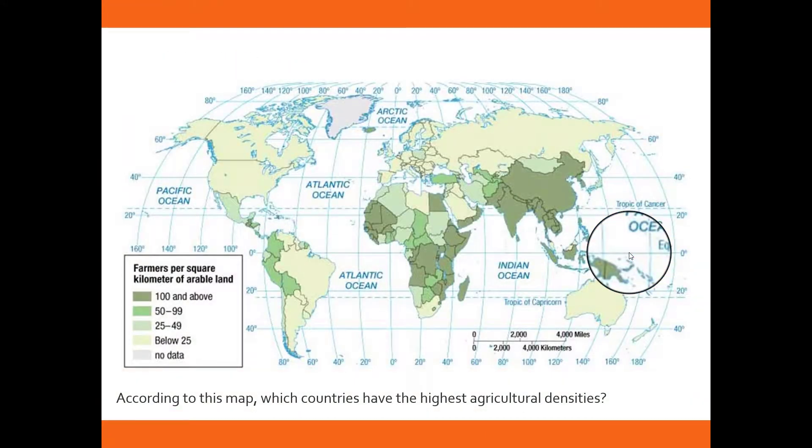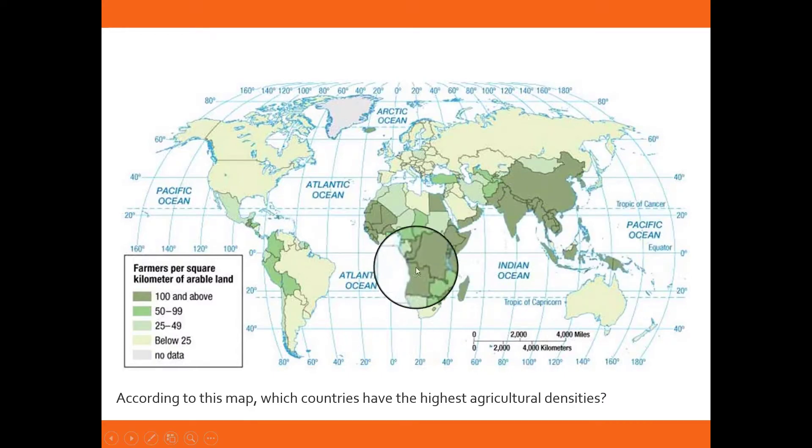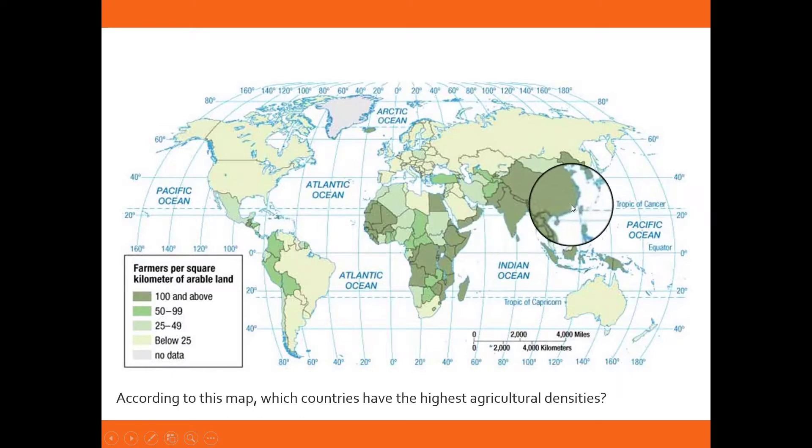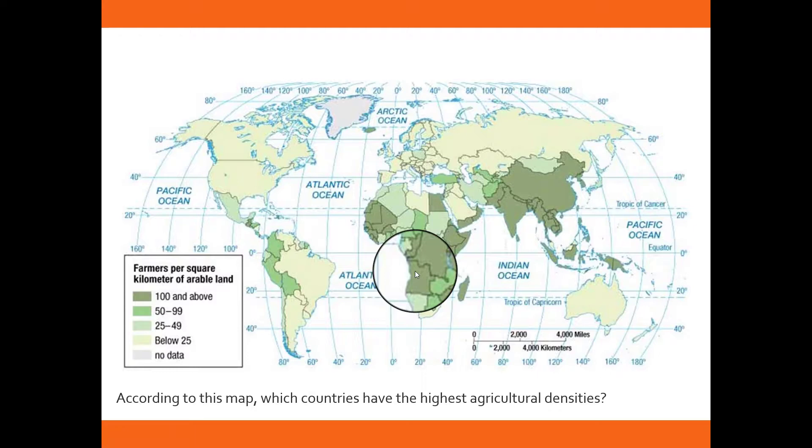Let's try an example. According to this map, which countries have the highest agricultural densities? You tell me. If you said parts of Africa, the sub-Saharan Africa and West Africa, and also parts of South Asia and Southeast Asia, then you're absolutely right. Based on the map, they have more farmers using agricultural density to show that there's more farmers in these areas than on other places.